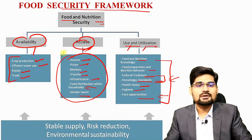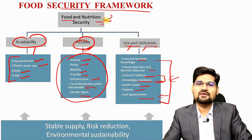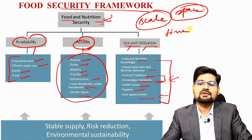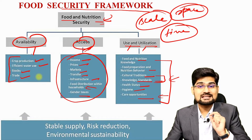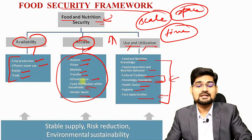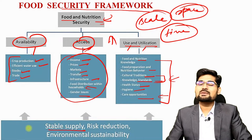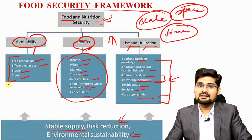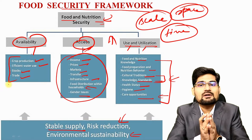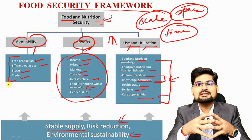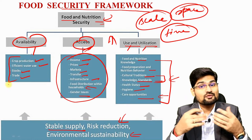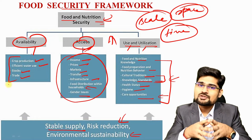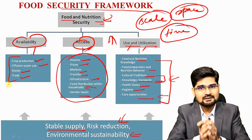We are integrating global with local — what we call 'glocal.' What is important is that the food security framework also has a scale, space and time dimension — the SST concept. Space, scale and time in the food security framework are really important. We need to look at the stable supply of food, reducing risks related to food, and environmental sustainability. This entire food security framework helps us analyze why some areas in the world are food insecure while some have abundance, and why these geographical patterns emerge on the global map.